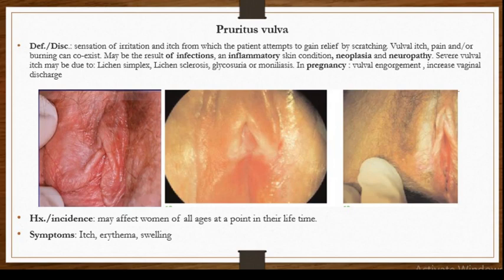Neuropathy can also cause pruritus vulva, and it may be due to injury, sometimes post-surgery, or local disease of the vulva such as entrapment of the pudendal nerve within the pelvis or inside the spine. Sometimes also a severe vulval itch may be due to lichen simplex, lichen sclerosus, and sometimes from glycosuria and also from candidal infection.